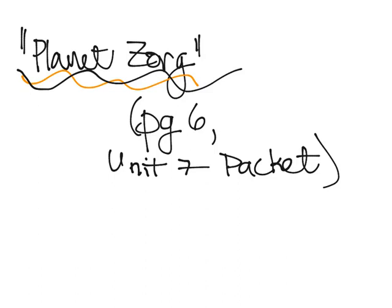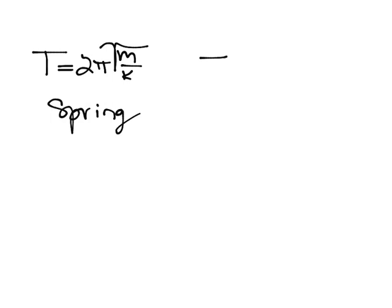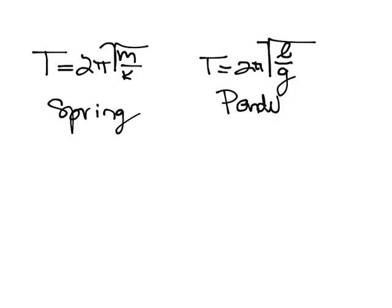Remember that for spring motion, we know that period is equal to 2π times the square root of m over k. So that's a spring. And for a pendulum, t equals 2π times the square root of l over g. So that's a pendulum. Alright, so now that you've actually tried the problem...